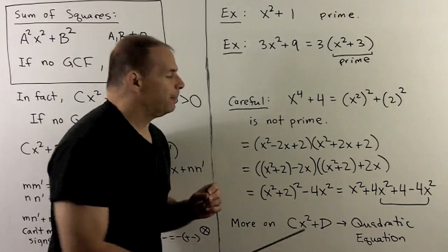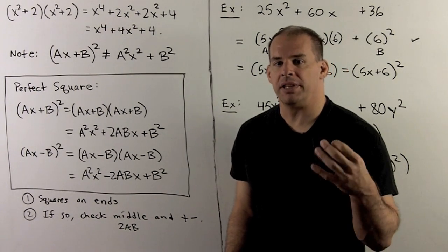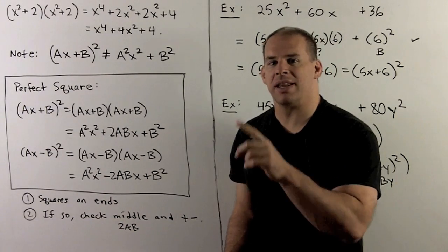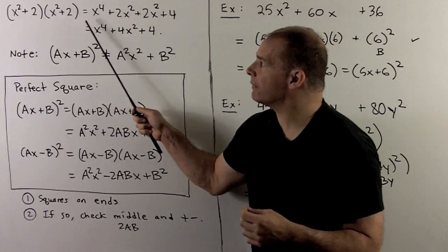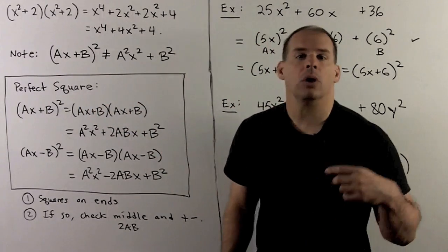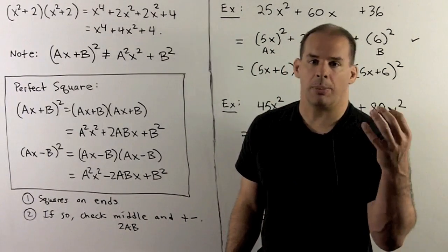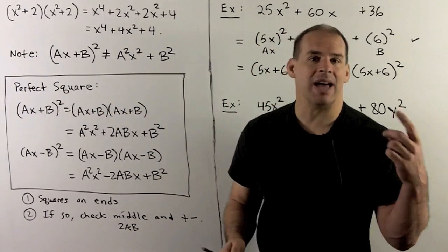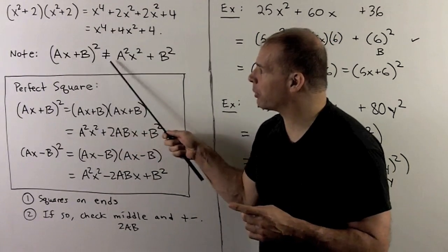The result for cx² + d will be revisited when we discuss the quadratic equation. Also, note: if you computed (x² + 2)² from the previous example, the right way is to write (x² + 2)(x² + 2) and apply FOIL — not square each term individually. Squaring each term would give x⁴ + 4, missing the middle term. The correct result is x⁴ + 4x² + 4. So (ax + b)² is not equal to a²x² + b²; without a common factor, a²x² + b² would actually be prime.